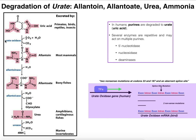If you are an organism that possesses functional urate oxidase, you would convert uric acid into allantoin. Most mammals are going to stop here and excrete allantoin — they do not express allantoinase, allantoatase, or urease. So an animal such as a cat most likely would excrete allantoin because they possess urate oxidase but none of those terminal three enzymes. So most mammals — rats, for example — are going to excrete allantoin.